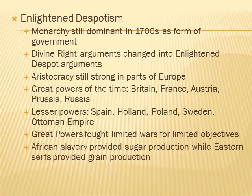The great powers of the time were Britain, France, Austria, Prussia, and Russia. The lesser powers were Spain, Holland, Poland, Sweden, and the Ottoman Empire. The great powers fought limited wars for limited objectives during this time period. African slavery provided sugar production while eastern serfs provided grain production.